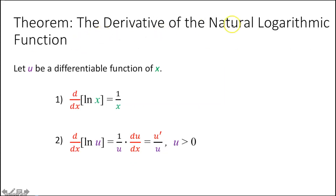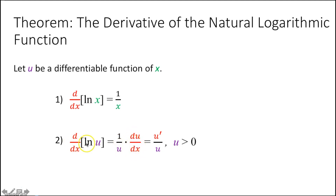The derivative of the natural logarithmic function: let u be a differentiable function of x. Then d/dx of ln(x) is equal to 1 over x. We also know that d/dx of ln(u), if u is a function, is equal to 1 over u times du/dx, or equivalently u prime over u. So if you take the derivative of ln(u), it's 1 over u — the derivative of the outer function — times the derivative of the inner function u. It's like the chain rule.